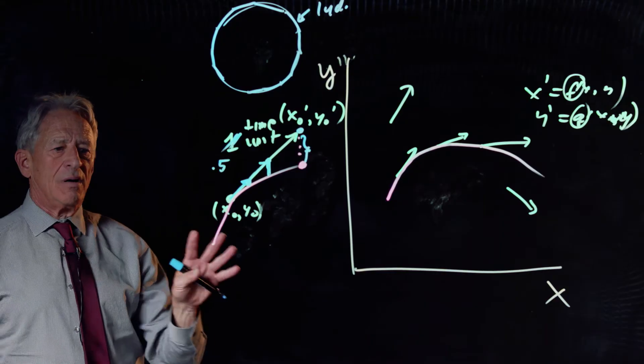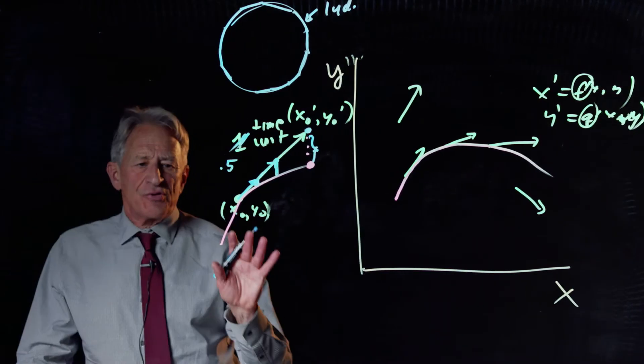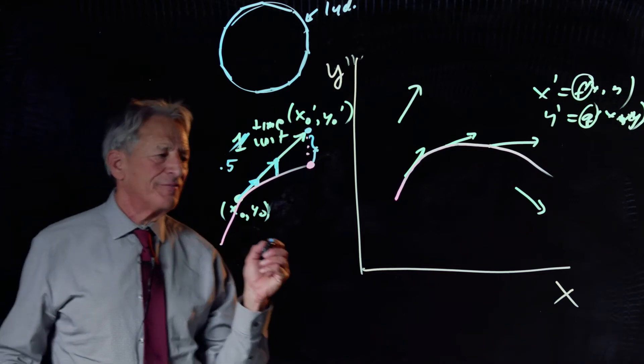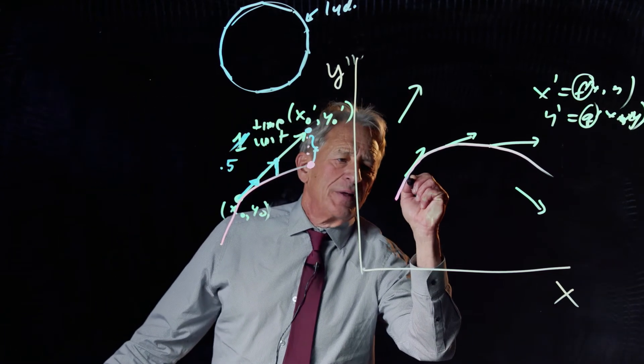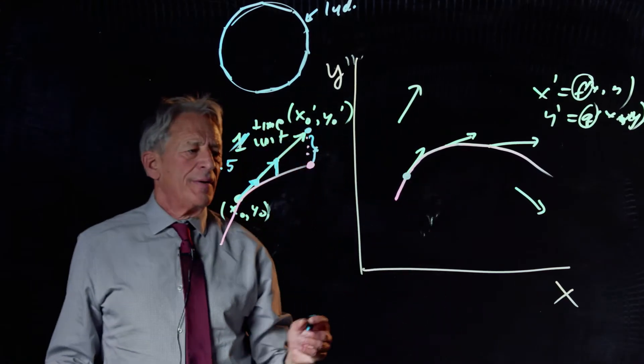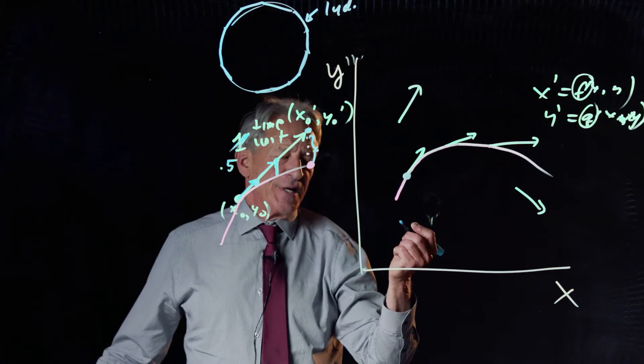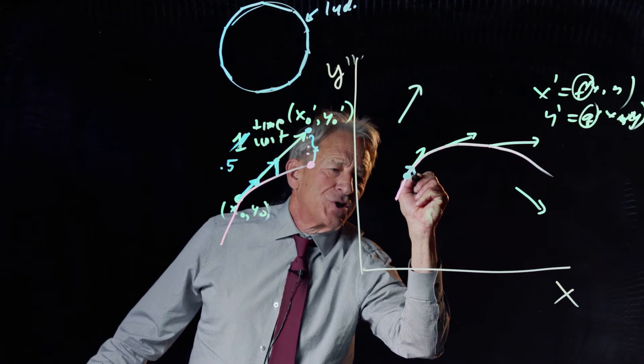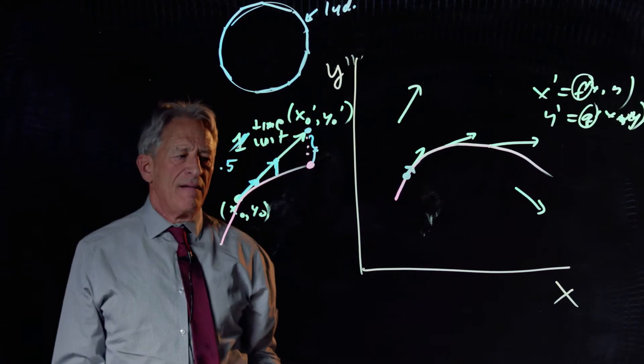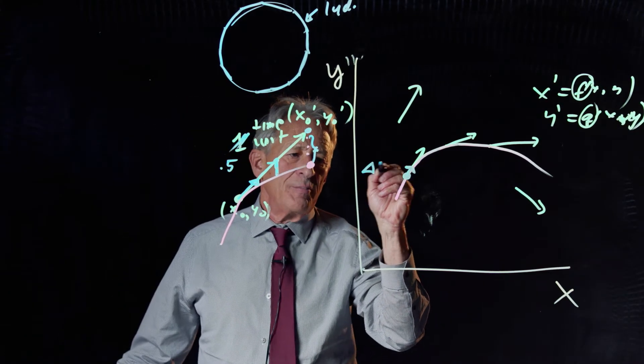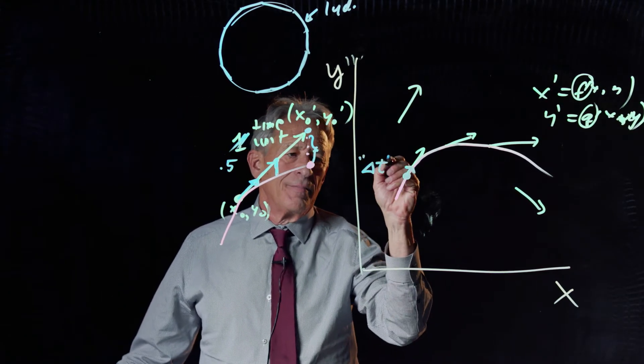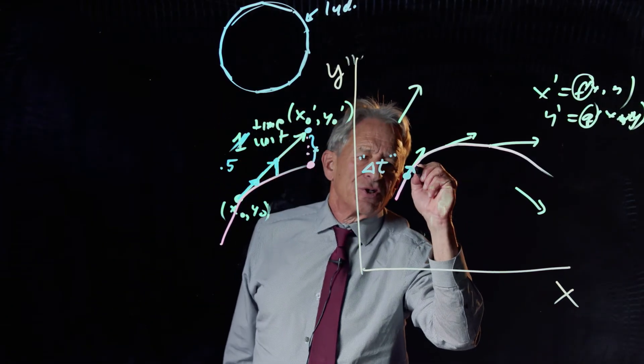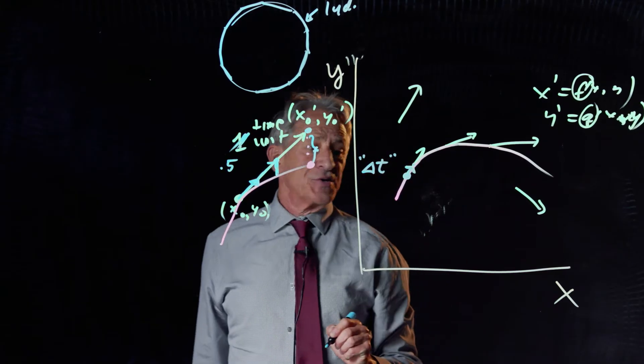That's the idea behind this method. So now we have a method for approximating the red curve. Pick an initial condition, consult the change arrow, follow the change arrow for a very short time, and we're going to call that very short time delta t.